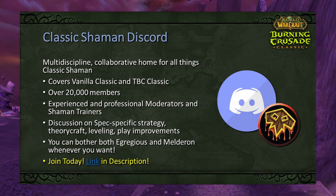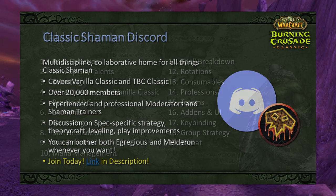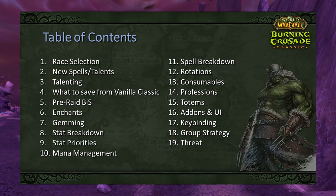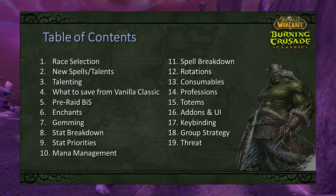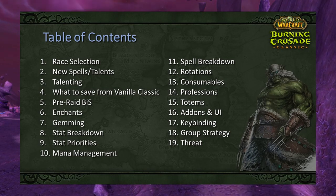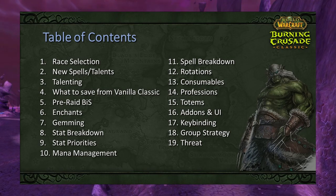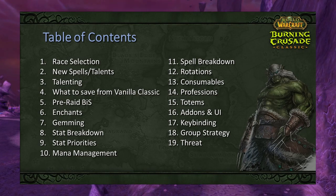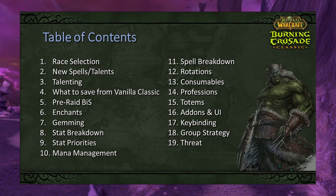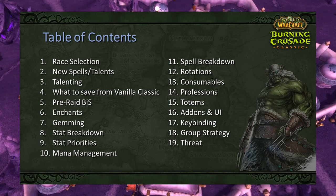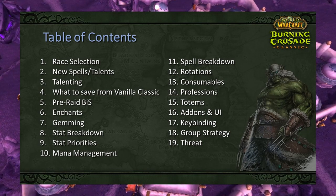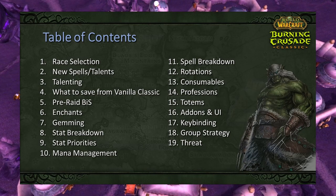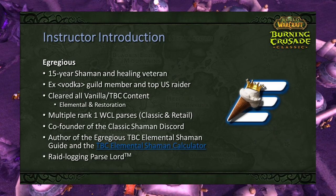If you plan on playing shaman in any capacity in TBC Classic or Vanilla Classic, I highly recommend joining the Discord. Moving on to the table of contents: we'll be talking about race selection, new spells and talents, talent builds, what saves from Vanilla Classic, BiS, enchants, gems, stat priority, mana management, spells, rotations, consumables, professions, totems, add-ons, UI, key binding, group strategy, and threat.